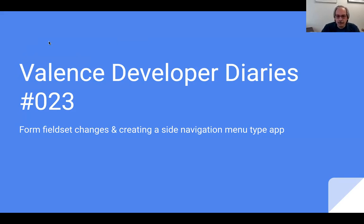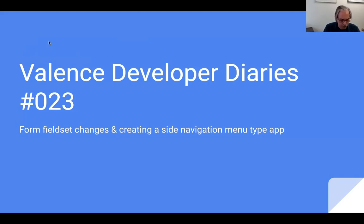Welcome to the 23rd edition of the Valence Developer Diaries. Today we're going to go over two things: some form field set changes that were created in a recent release, and we're also going to show you how to create an application that has a side navigation menu — that was asked on a forum post, so that's how we got the idea to do this one.